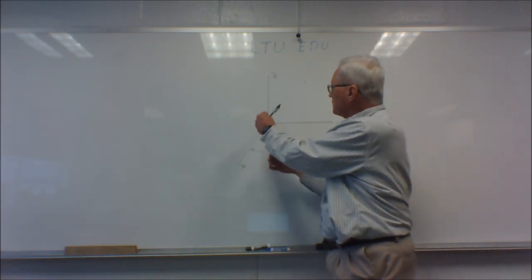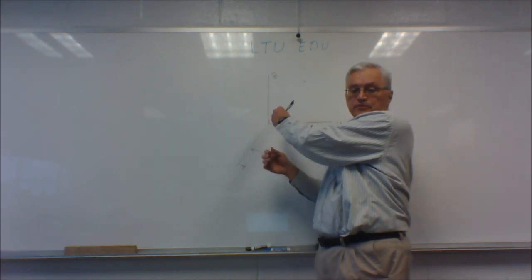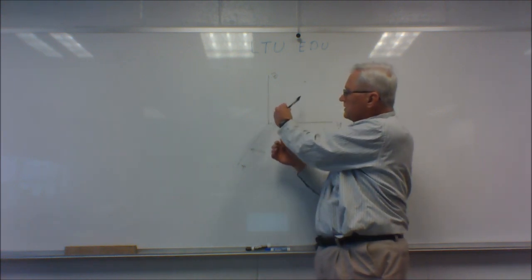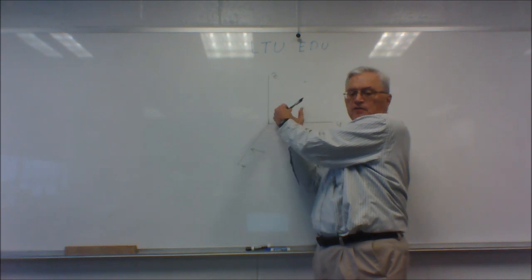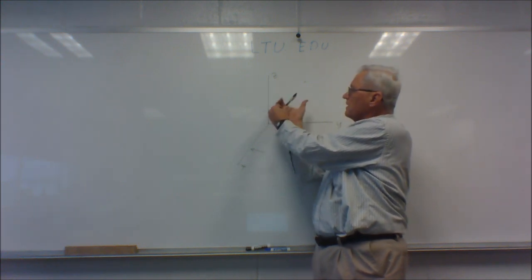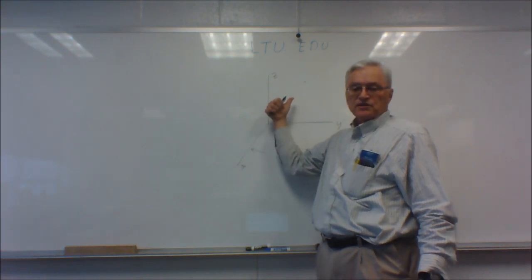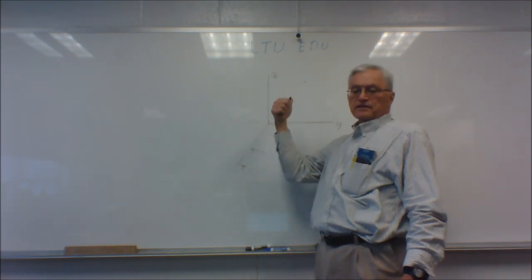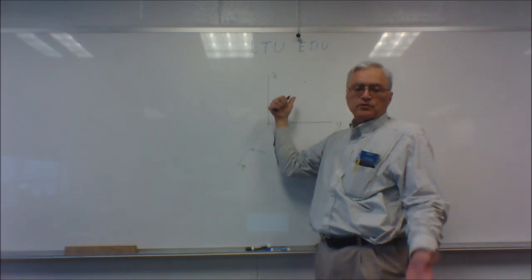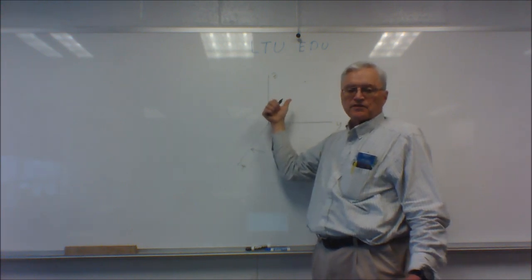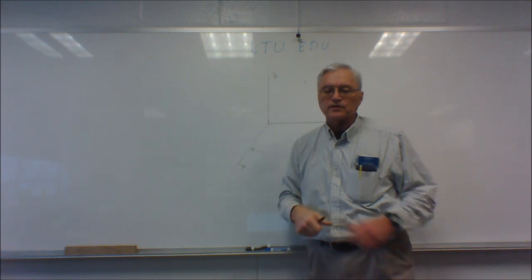So if I have an axis pointed this way, up and to the right and into the board, okay, if I apply a moment about this inclined axis, my thumb points in the positive z direction, the positive y direction, and the negative x direction. So this rule makes it simple to determine the directions of the i, j, and k components of a moment.